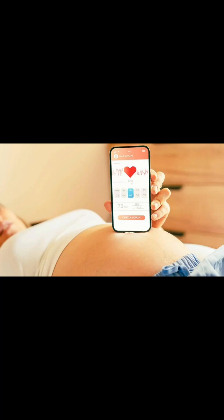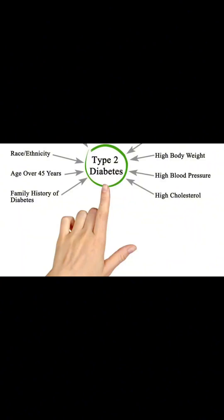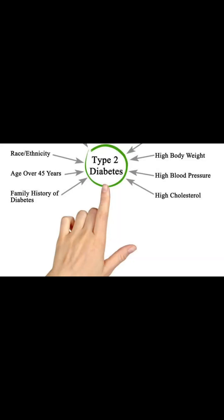While gestational diabetes usually resolves after childbirth, women with gestational diabetes have an increased risk of developing type 2 diabetes later in life, as do their children.